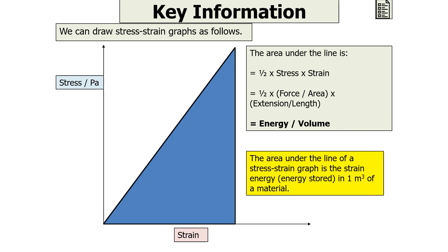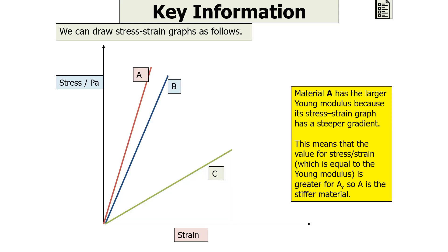Looking at a stress-strain graph comparing multiple materials, material A has the largest Young Modulus because its stress-strain graph has the steepest gradient. The value of stress over strain is greatest for A, meaning A is the stiffest material of the three.